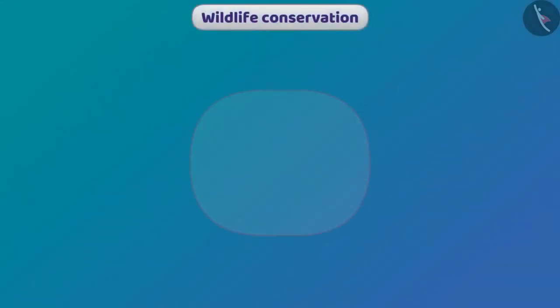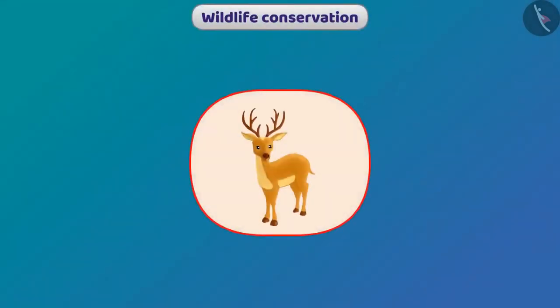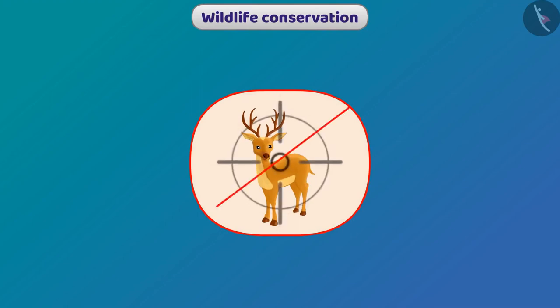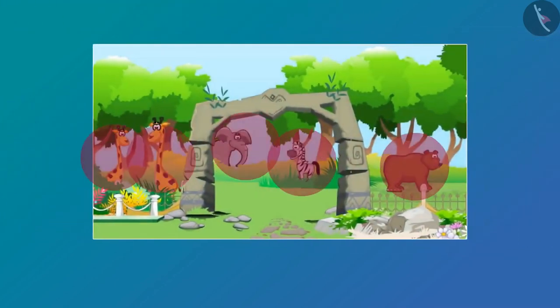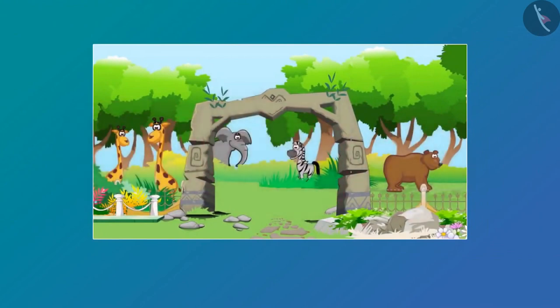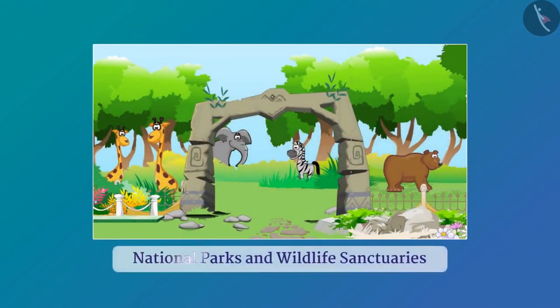We should also conserve wildlife. For this, we should strictly follow the ban on animal hunting. Animals and their habitat have been preserved with the help of national parks and wildlife sanctuaries. Discuss in your class about how you can help in the conservation of wildlife and forests.